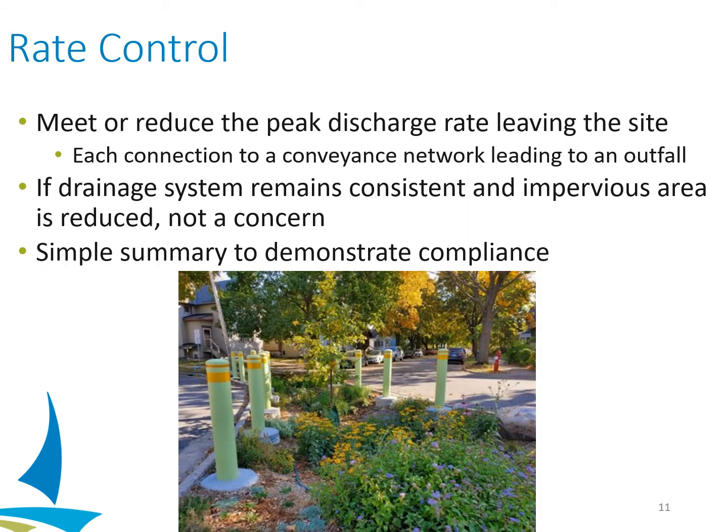For the rate control requirement, the project must meet or reduce the peak discharge rate for flow leaving the site at specified points — which we define as the connection to a conveyance network that leads to an outfall. Peak discharge rates typically increase when there is an increase in impervious area. There are other potential factors such as an increase in slope or a significant change in the configuration of the drainage system. We expect that a typical transportation project will inherently meet the rate control requirements. In most cases, we will just require a simple summary to explain that the peak discharge rate will be at or below the existing rate. Where impervious area does increase or other factors contribute to a potential change in peak discharge rate, a formal model will be required to demonstrate compliance for a range of storm events.